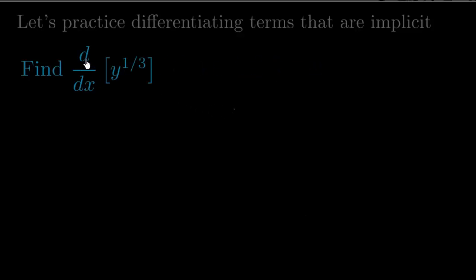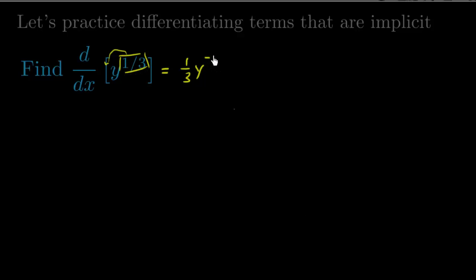So let's go ahead and find d/dx of y to the one-third. The easiest thing to do is just differentiate it like you would any other term. It's a power rule — you've got y to the one-third, so we're going to take the one-third and bring it down out front, giving us one-third times y to the negative two-thirds, and then we immediately multiply by y prime, because you're differentiating with respect to x and that is not x, so you have a chain rule. That's the derivative.